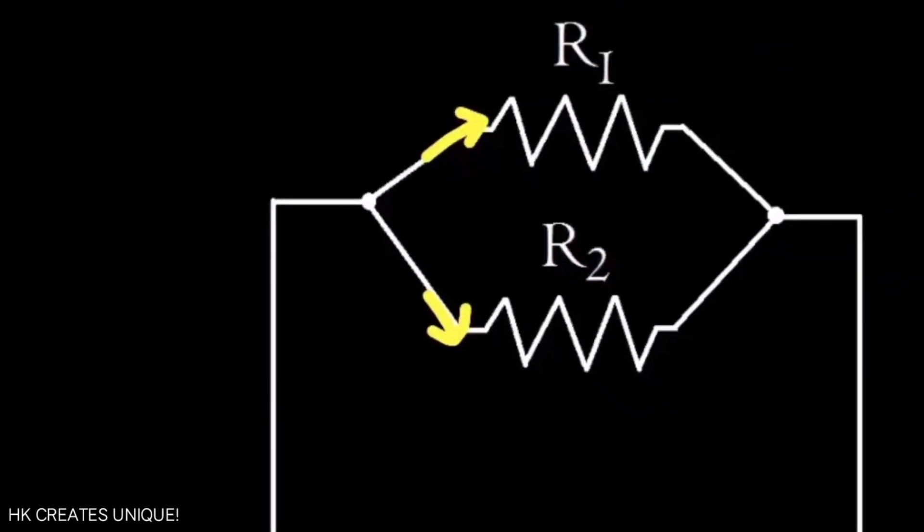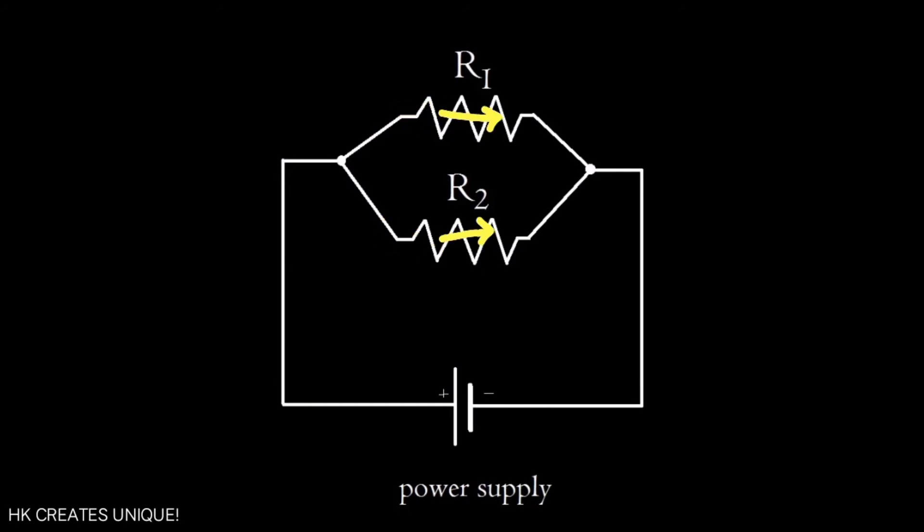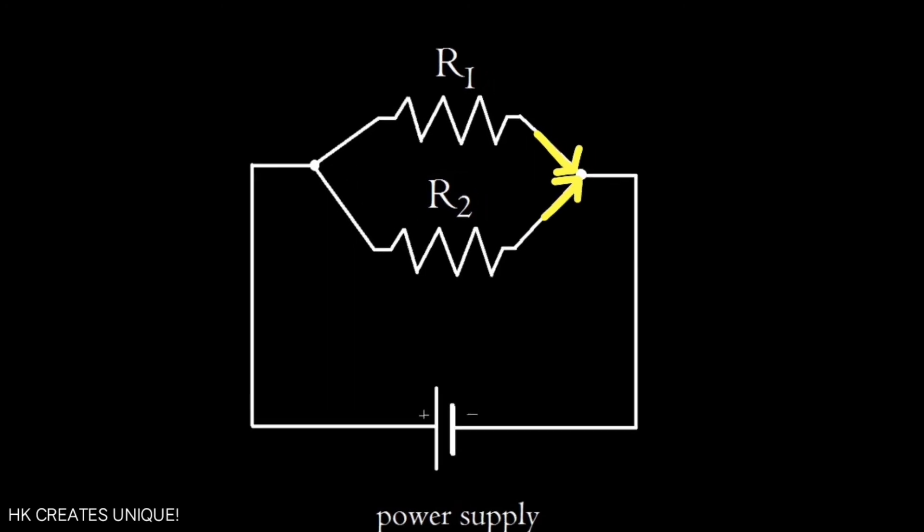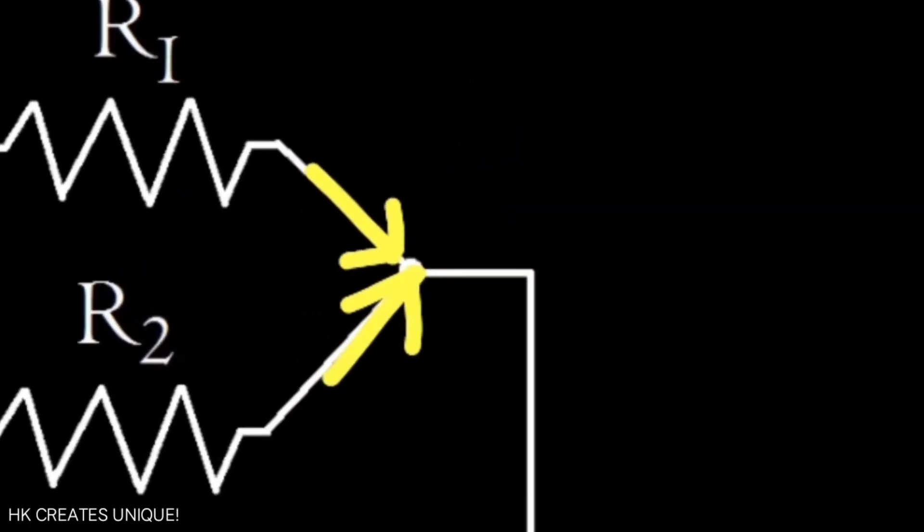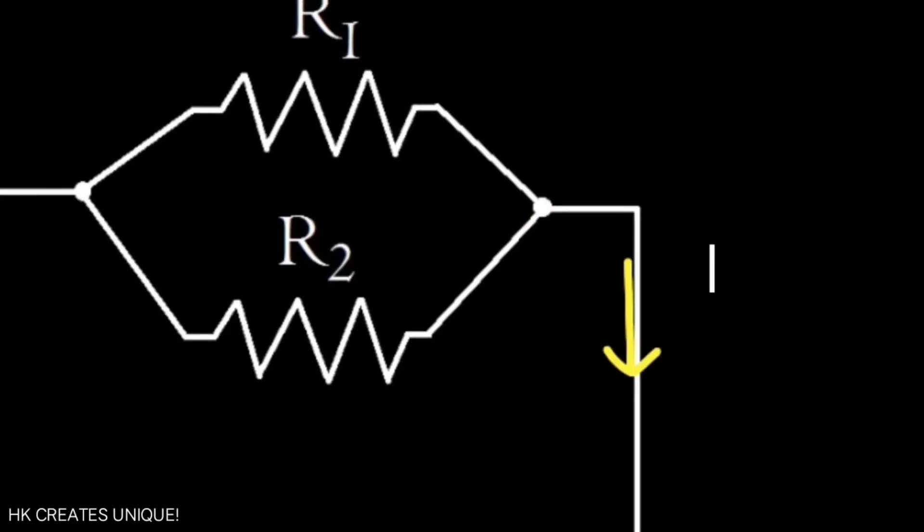Now current i1 and i2 flows through the resistors. Here it enters the second junction. According to Kirchhoff's current law, i1 and i2 combines and gives i, and finally completes the circuit.